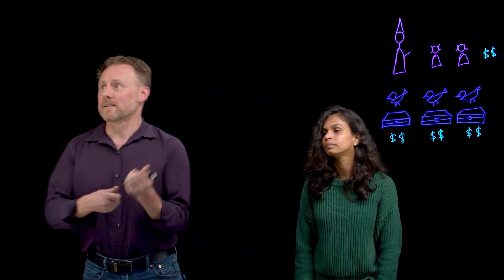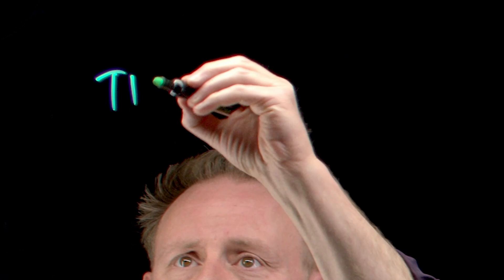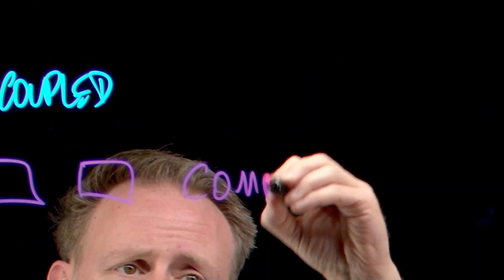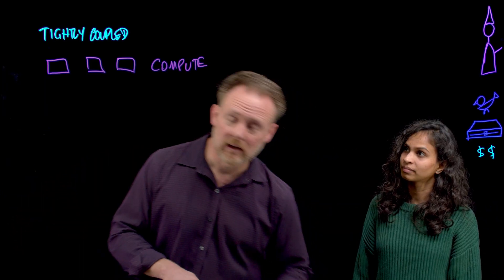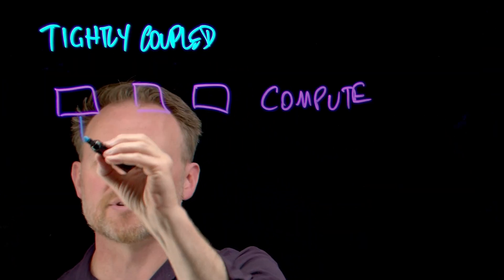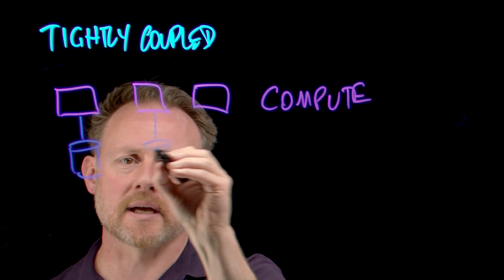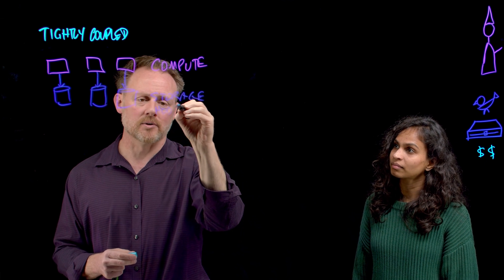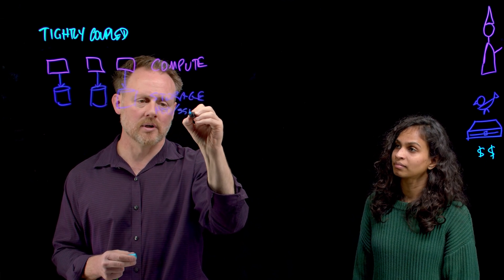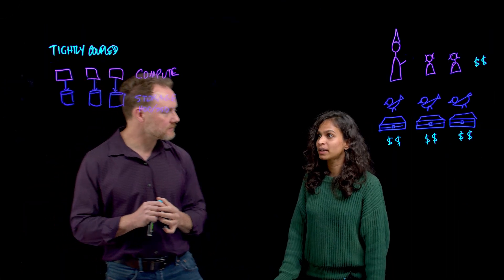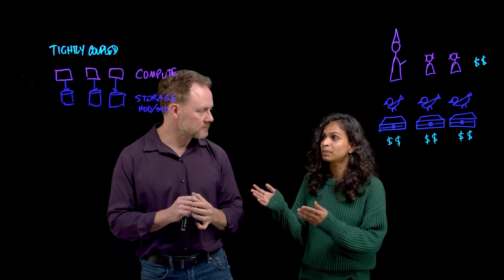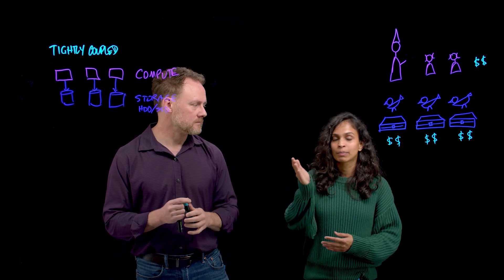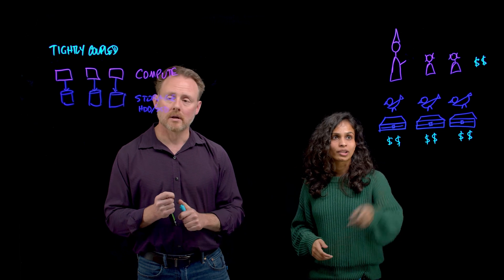So in Pinot, not in Harry Potter, in a tightly coupled system, it's going to look like this. Pinot servers, and these represent compute. Each one in the tightly coupled scenario has a direct attached disk storage. And this is either direct attached hard disk or SSD. And if you remember from the other video, this is what helps us keep the data access latency super low. But often, you would have to scale your compute just because you want to keep up with the growing data volume.